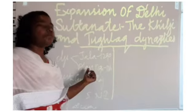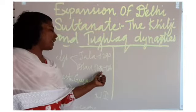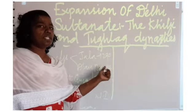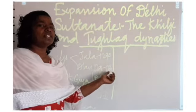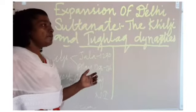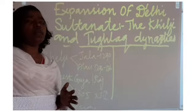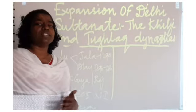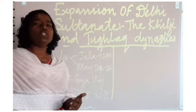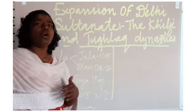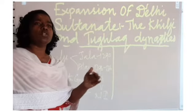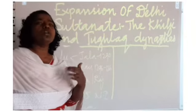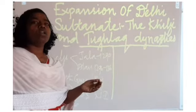Alauddin Khalji became the ruler from 1296 to 1316 CE. As soon as he became the ruler, his main motive was to expand his kingdom, maintain a huge standing army, and he carried out different conquests, invading different parts of India.